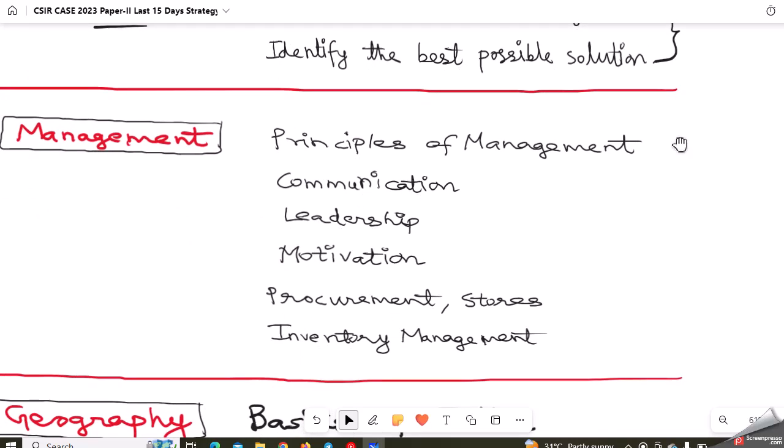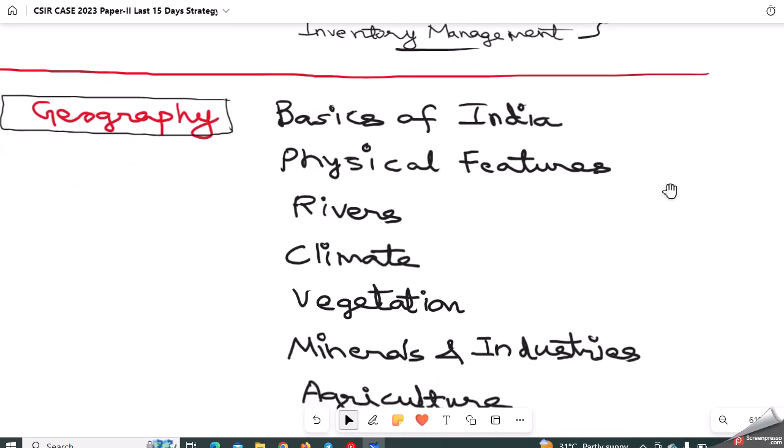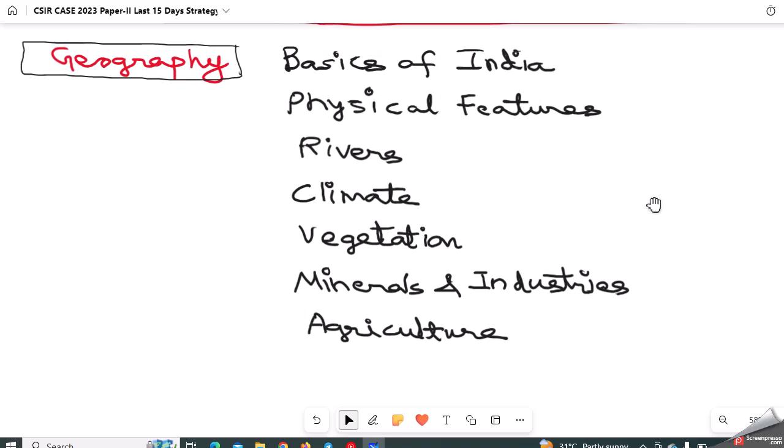As far as management is considered, principles of management is a very important topic - staffing, controlling are important topics. Then what I think is important is communication, leadership, motivation - there are various theories related to motivation, who gave what theory, what was the essence of that theory, what are leadership qualities. Then procurement and stores and inventory management is also quite important in management. Try to cover these topics in remaining days. You can cover these from the NIOS source, the link I have shared. Mrunal sir has compiled these PDFs on his website. Management is a purely theoretical topic but it is very easy to score.